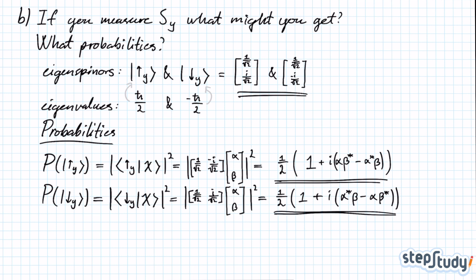Those are the probabilities of finding spin up or spin down in the y-direction, given that you have a state prepared with the coefficients alpha and beta.